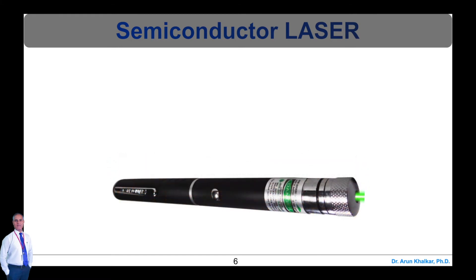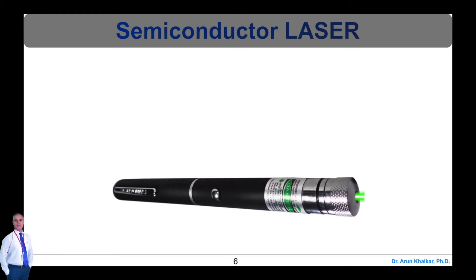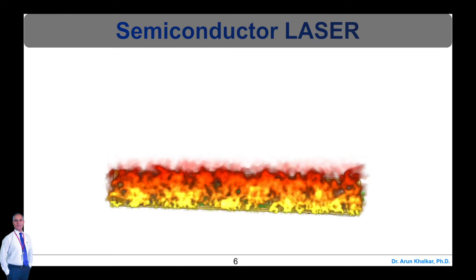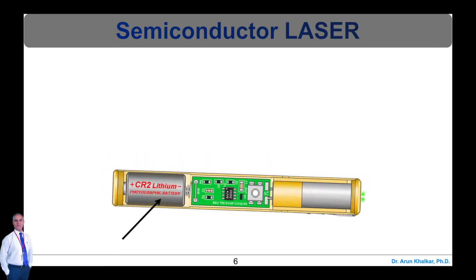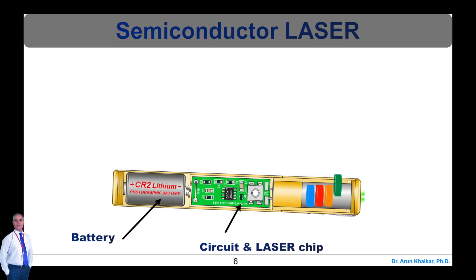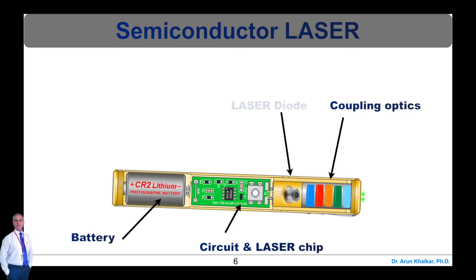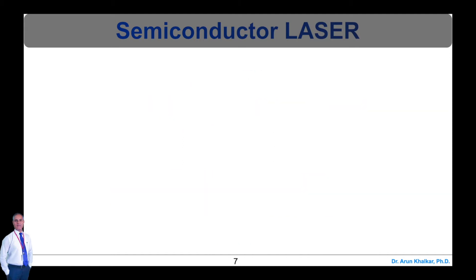The actual size of a laser pointer is less than 10 cm. But if we take a look inside the laser pointer, most of the part is filled with battery. More precisely, the size of a laser diode is 1 mm. It is hard to fabricate such a powerful tool at the size of 1 mm. Nowadays it's possible with the help of nanotechnology and advanced fabrication techniques.